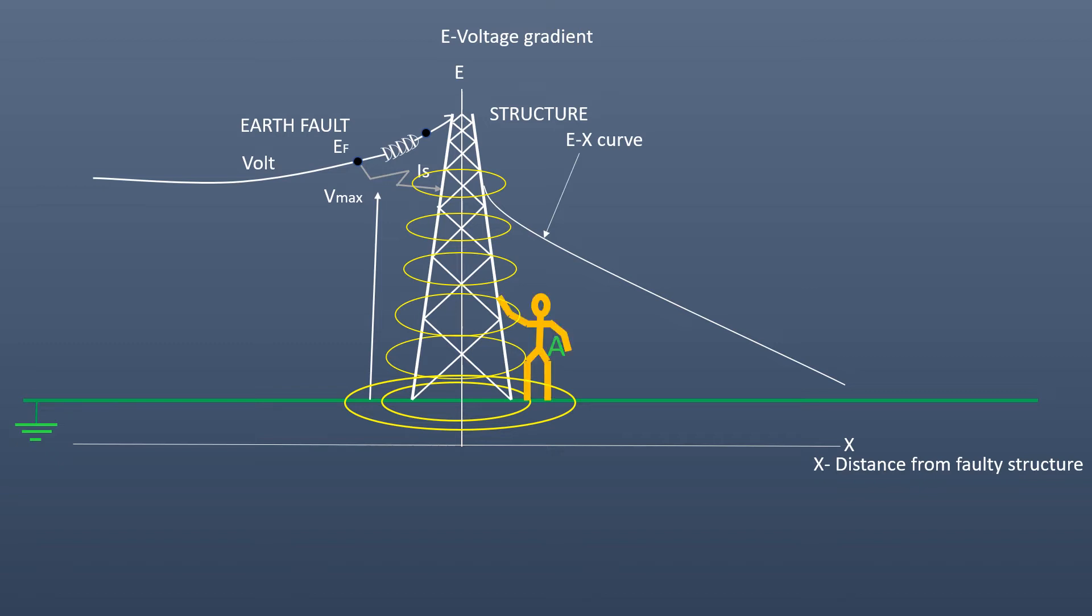Suppose a person standing on the floor of the substation touches the fault structure by raising his finger. Voltage at touch point is Va and voltage at his feet is Vb. A voltage or potential difference Va minus Vb causes a flow of current through his body which offers him electrical shock. Here Va minus Vb is the touch potential.